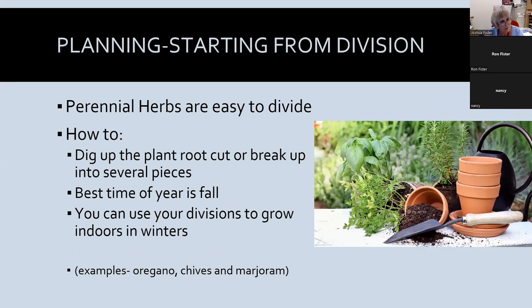Division is a great way to propagate perennial herbs, especially chives. You dig up the plant root, cut or break it into several pieces. The best time is fall, though many can be divided in spring or fall. You can bring the divisions inside to grow indoors in winter — just repot them in potting soil or potting mix, not garden soil. Oregano and marjoram are also great candidates for division.